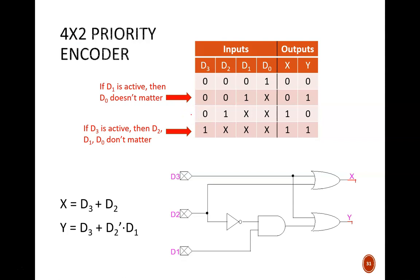Next row up, if d3 equals 0 and d2 equals 1, then d2 is guaranteed to receive priority, and the remaining inputs don't matter. The output must be 10.